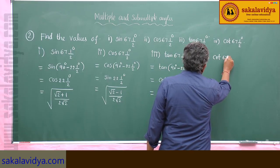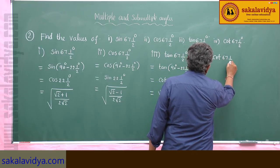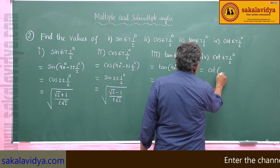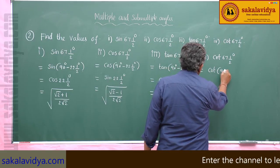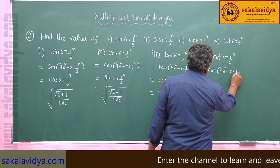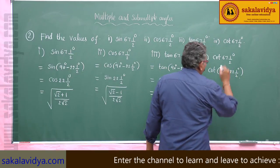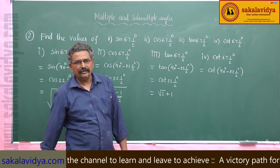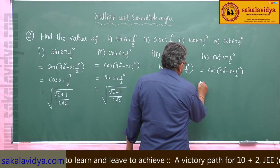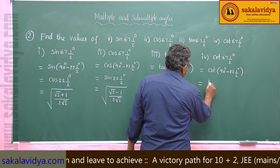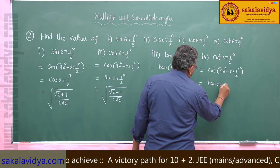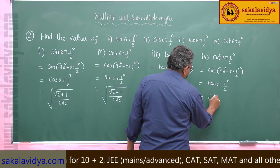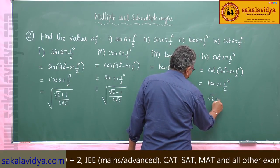Fourth problem: cot 67 and a half degrees. This is cot(90 degrees minus 22 and a half degrees). Since cot(90 minus θ) = tan θ, this equals tan 22 and a half degrees, which is √2 + 1.